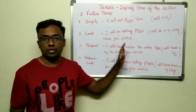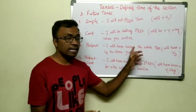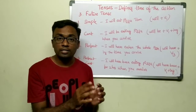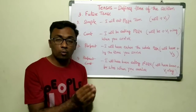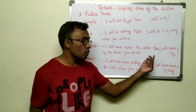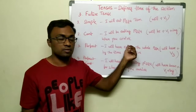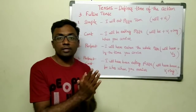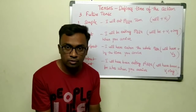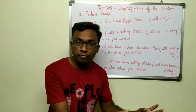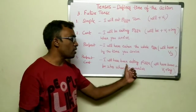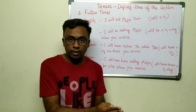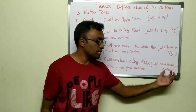Future perfect tense: an action which you will be just finishing in the future — 'I will have eaten the whole pizza by the time you arrive.' In perfect tense, V3 is used — 'eaten' is V3. Future perfect continuous tense: an action you will be doing for a long time in the future — 'I will have been eating pizza for two hours when you arrive.' The structure is will have been + V1 + ING.